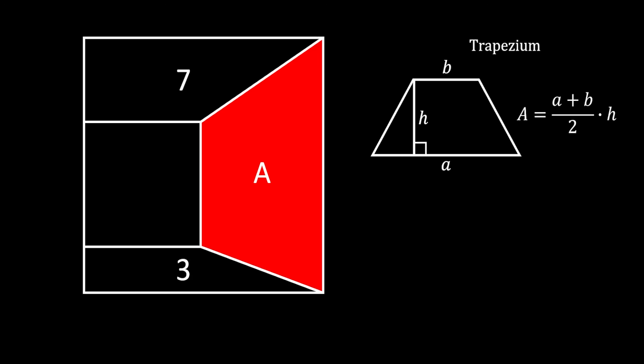If we take a look at our sketch, we can label the side of our big square as a and the side of our small square as b. Those two sides will actually represent the bases of our red trapezium. Now let's try to find the height of this trapezium.